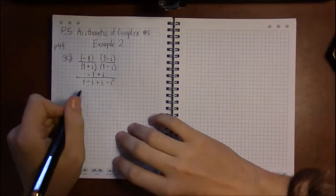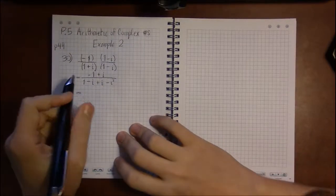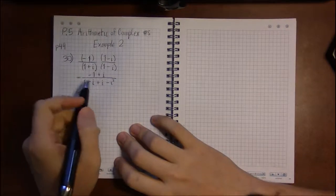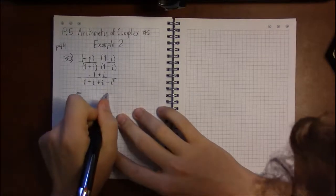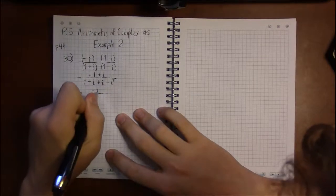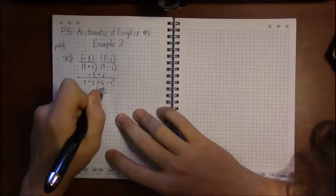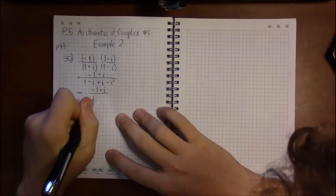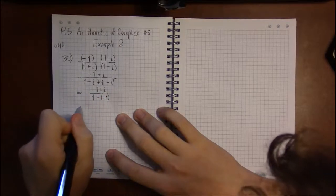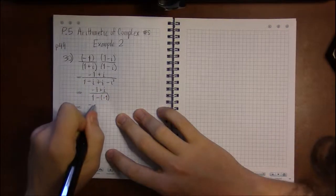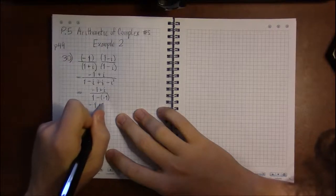But in the denominator, minus i and plus i can cancel, and we've got a shorter expression, or a more familiar expression, rather, for i squared. i squared is minus 1, so this is minus 1 plus i on top.